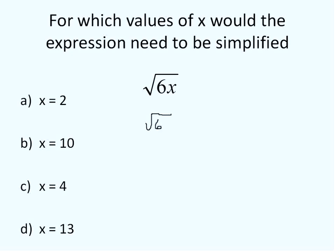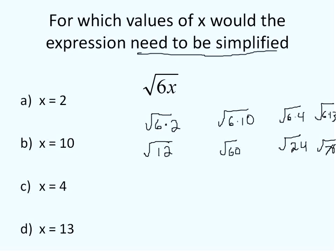One of them is 6 times 2. 6 times 2 is 12. Okay, could that be simplified? The next one, 6 times 10, which would be the square root of 60. The next one, 6 times 4, is the square root of 24. And 6 times 13 is equal to the square root of 78. Alright. So, I've got my square roots now. 12, 60, 24, and 78. And I'm trying to see which ones of those would need to be simplified.